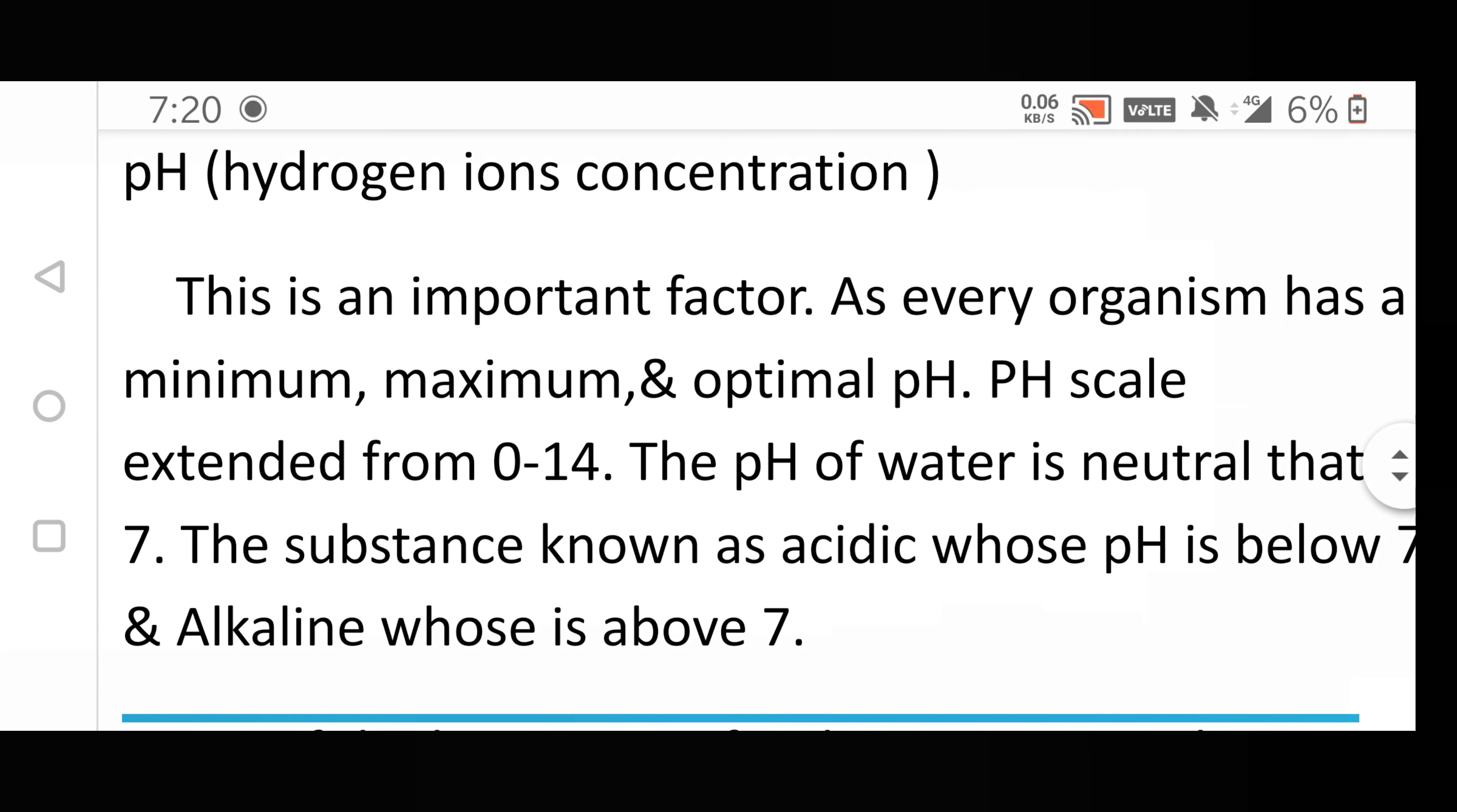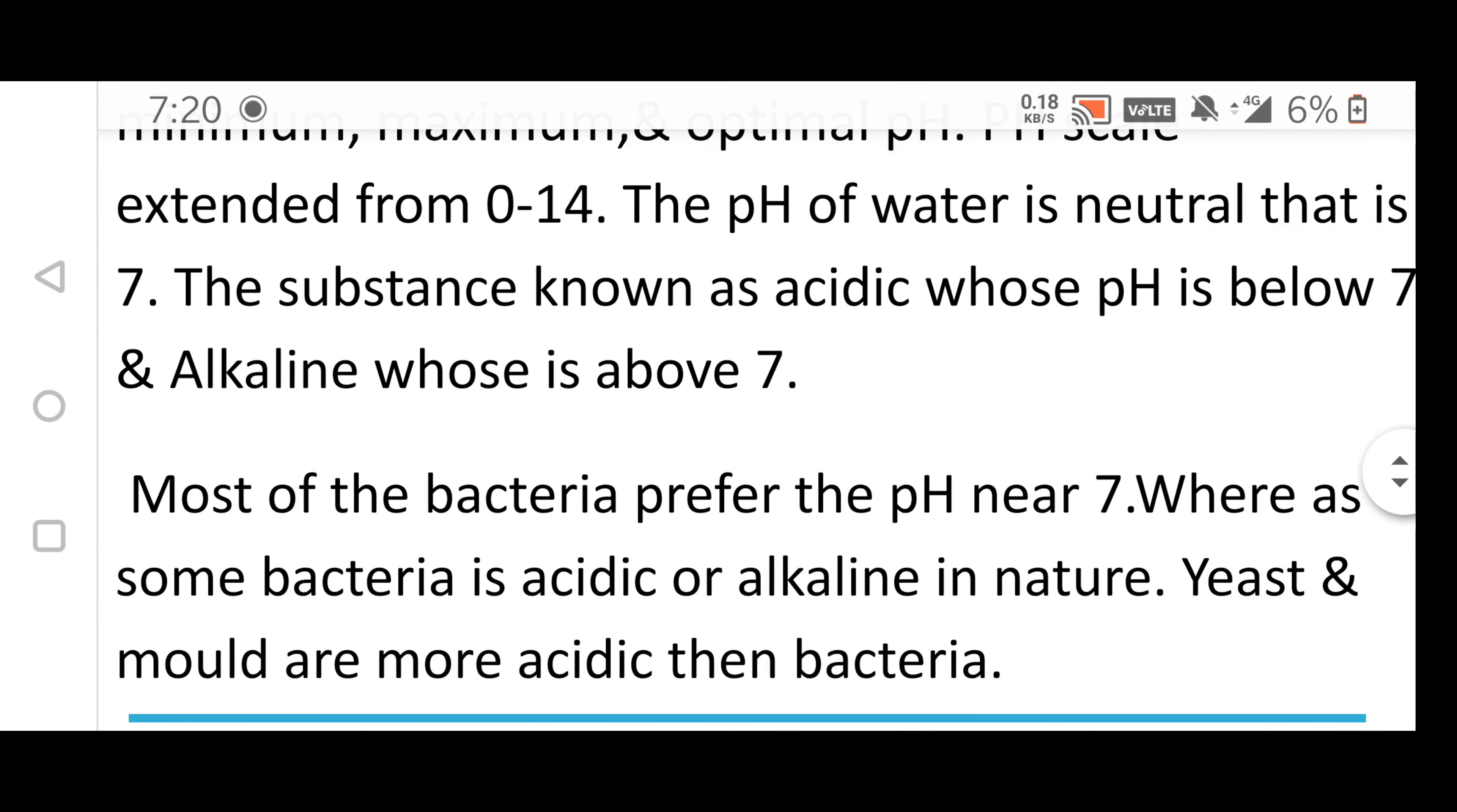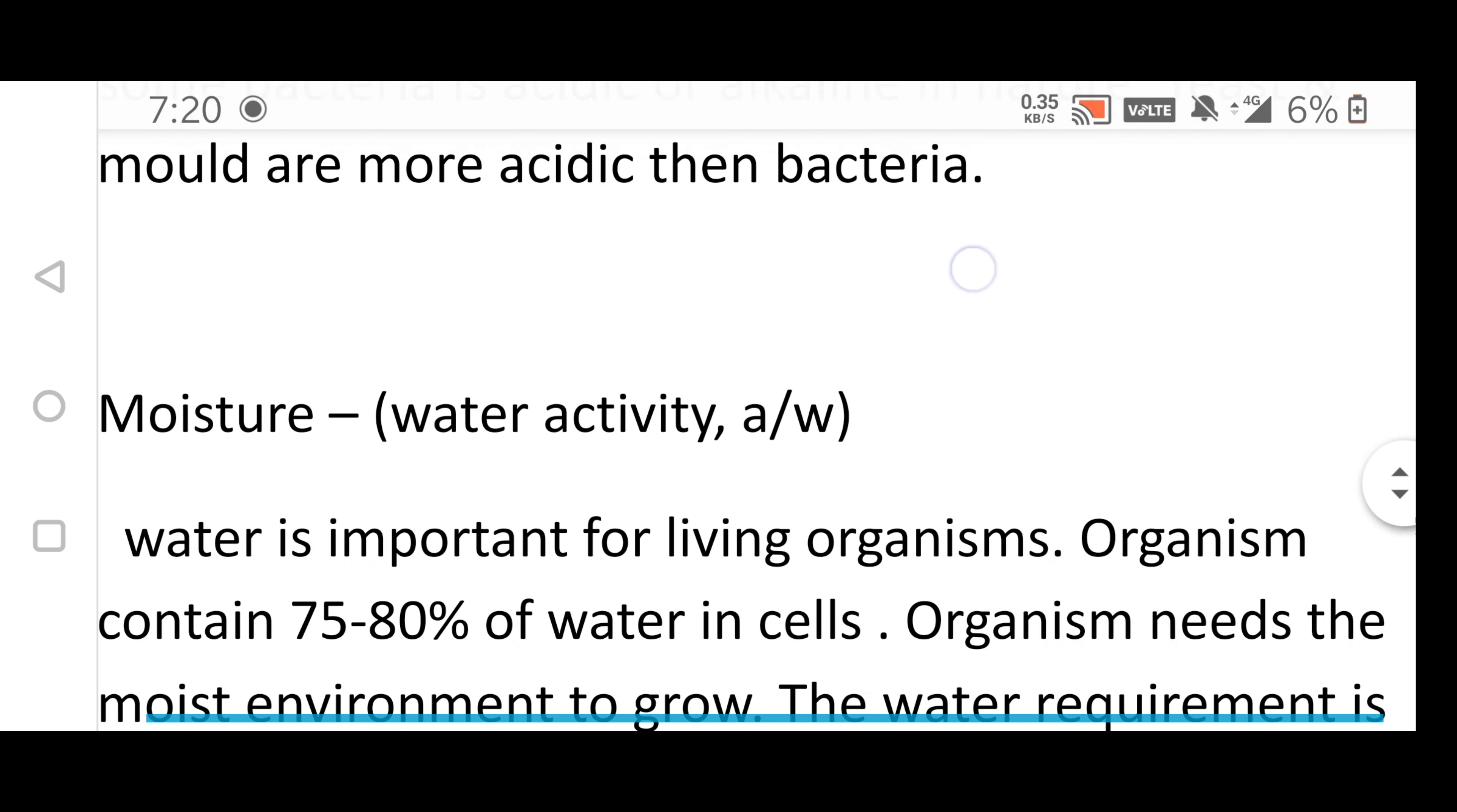pH (Hydrogen-ion concentration): This is an important factor as every organism has a minimum, maximum, and optimal pH. pH can extend from 0 to 14. The pH of water is neutral, i.e., 7. Substances with pH below 7 are acidic and above 7 are alkaline. Most bacteria prefer a pH near 7, whereas some bacteria are acidic or alkaline in nature. Yeast and mold are more acidic than bacteria.